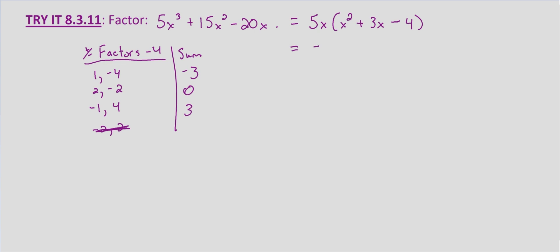So this equals 5X times X minus 1 times X plus 4. Now to check that we can just multiply through. So I'll save the 5X for last. We'll look at that afterwards. We'll just distribute that.